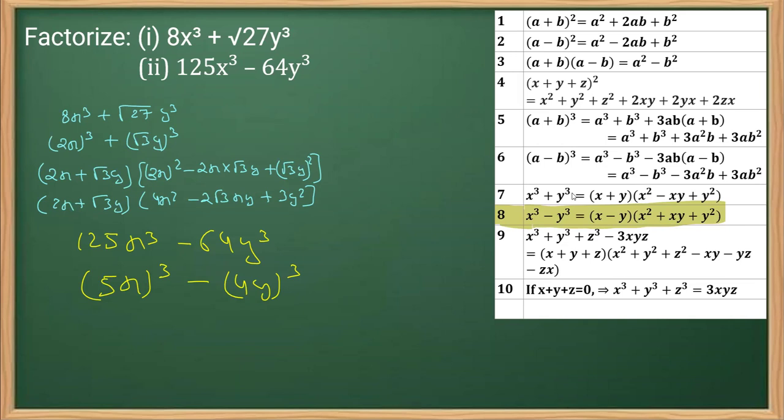And then if you solve it further, well I can see I can write this as x plus y, that means the first term, sorry, x minus y, first term minus the second term, bracket start, square of the first term which is (5x)².